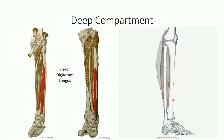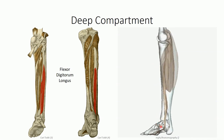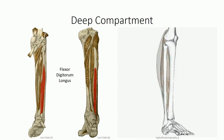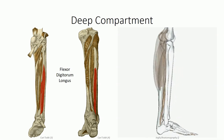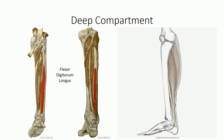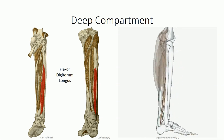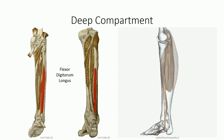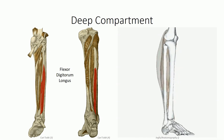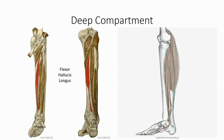Medial to tibialis posterior is flexor digitorum longus. It originates off the posterior surface of the medial tibial shaft and passes under the flexor retinaculum of the ankle to insert on digits two through five in the foot. In many respects its structure and function is similar to the flexor digitorum profundus that we saw in the forearm. In addition to plantar flexion and inversion, it contributes to flexion of digits two through five in the foot.